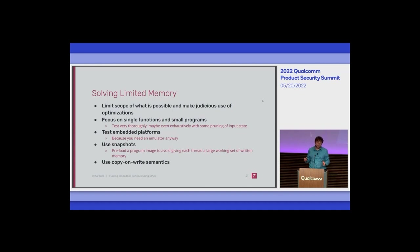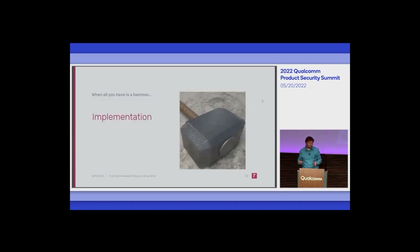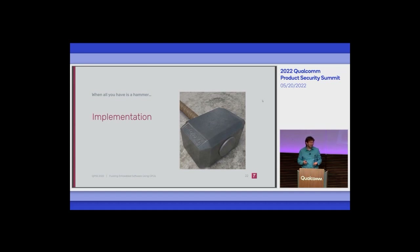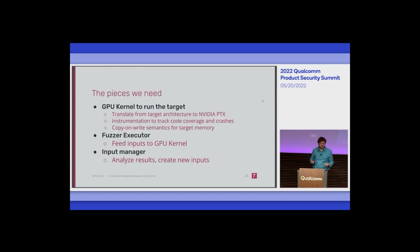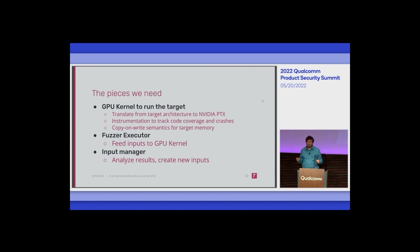Let's talk about how this actually works. Our implementation is called Mullet — a word for 'hammer' — because when you have a hammer of dynamic translation, everything starts to look like a nail. Before discussing the exact details, let's talk about the pieces we need. One: we need a GPU kernel, so we take the target program, translate it, and embed instrumentation.